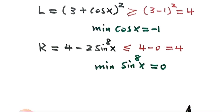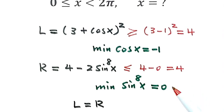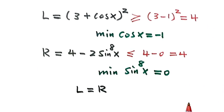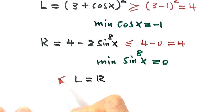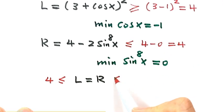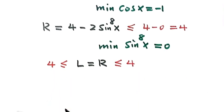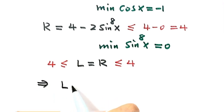Because the left hand side equals the right hand side — that's the equation — we have the left hand side bigger than or equal to 4, and the right hand side less than or equal to 4. So both the left hand side and the right hand side must equal exactly 4.